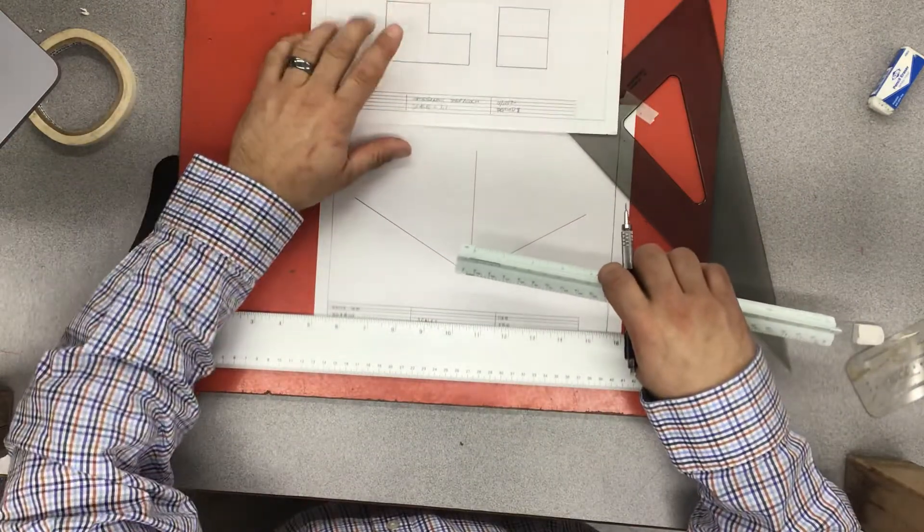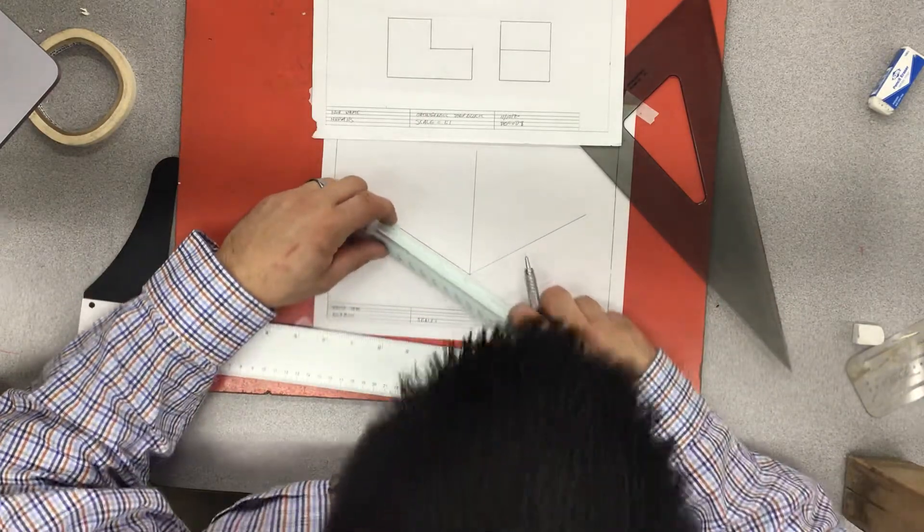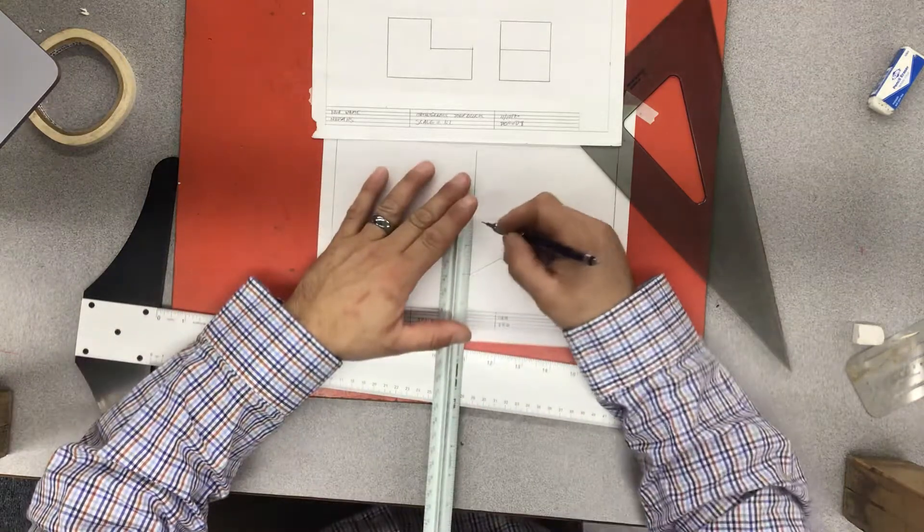So what I'm doing with my side view, the one that's going to go here, I'm going to start by measuring my three inches total and my two inches total up.